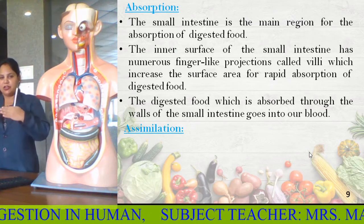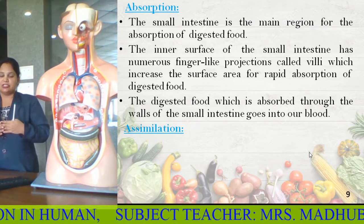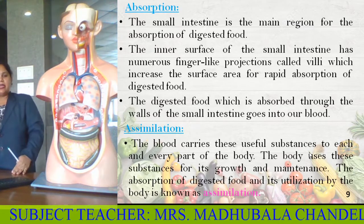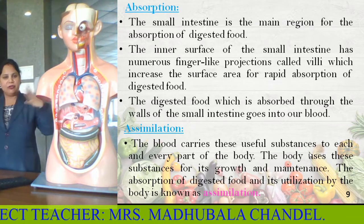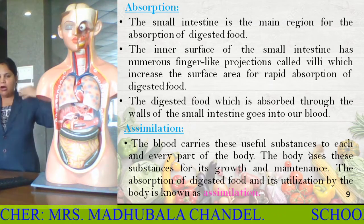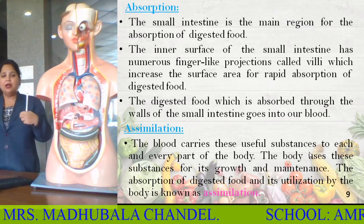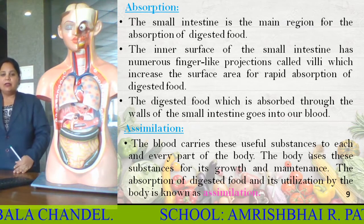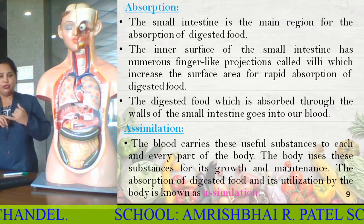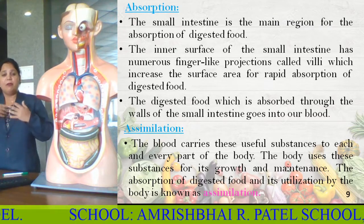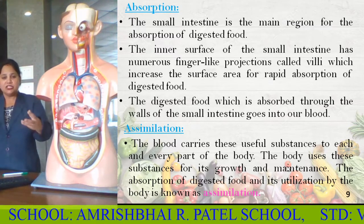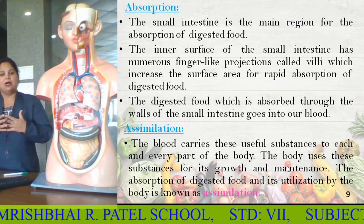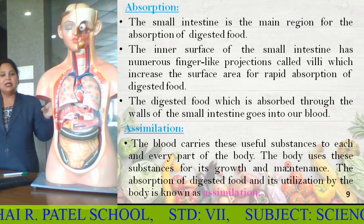Now, blood transport comes into action. Whatever absorbed food is there, it is sent to the blood. The blood now carries these useful substances to all the cells in our body — each and every part of the body, from top to bottom. The body uses these substances for growth, maintenance, repairing, and multiplying. All these metabolic activities are possible because of assimilation by all the body parts, and blood is what provides the absorbed food to every part.